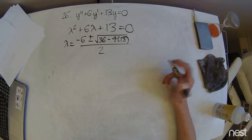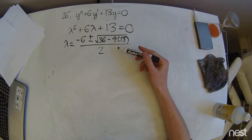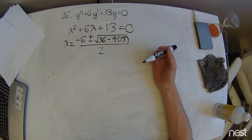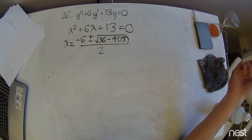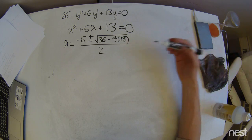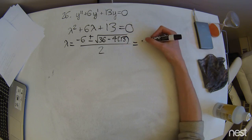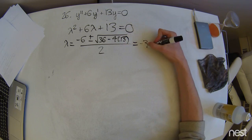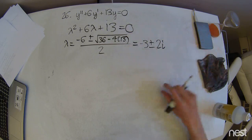Now what we immediately notice is that 4 times 13 is definitely bigger than 36, so we're going to end up getting complex roots here. Those complex roots are going to be negative 3 plus or minus 2i.